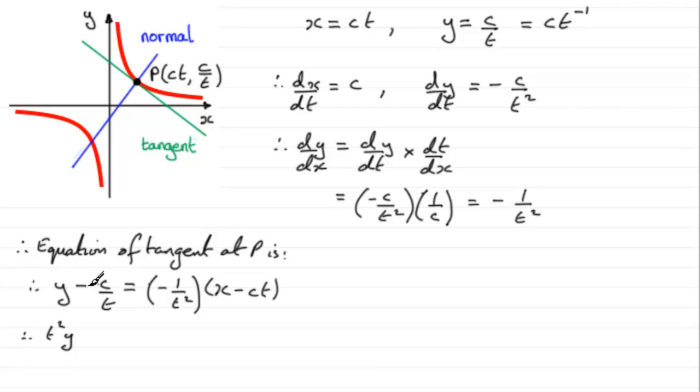And then from this term, I'm going to just have minus 1 then, multiply by the bracket. If I expand the bracket, I'm going to get minus x plus ct.